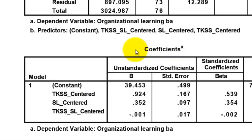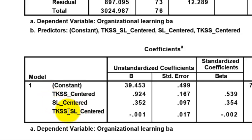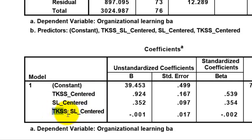This is the coefficients box. This is your most important box when it comes to telling you about the strength of your IVs as predictors on your DV. So according to this box, your DV was organizational learning something, and it looks like you got three IVs: TKS centered, SL centered, and TKSSL centered.